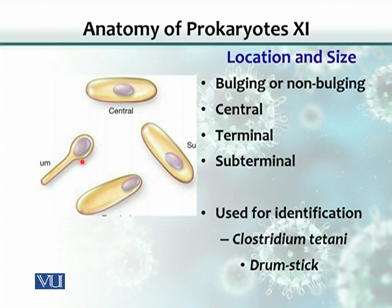When it's bulging, the spore is swollen or larger than the size of the rest of the bacterium. It could also be non-bulging. These are various kinds of spores and their positions that help us in determining the species.